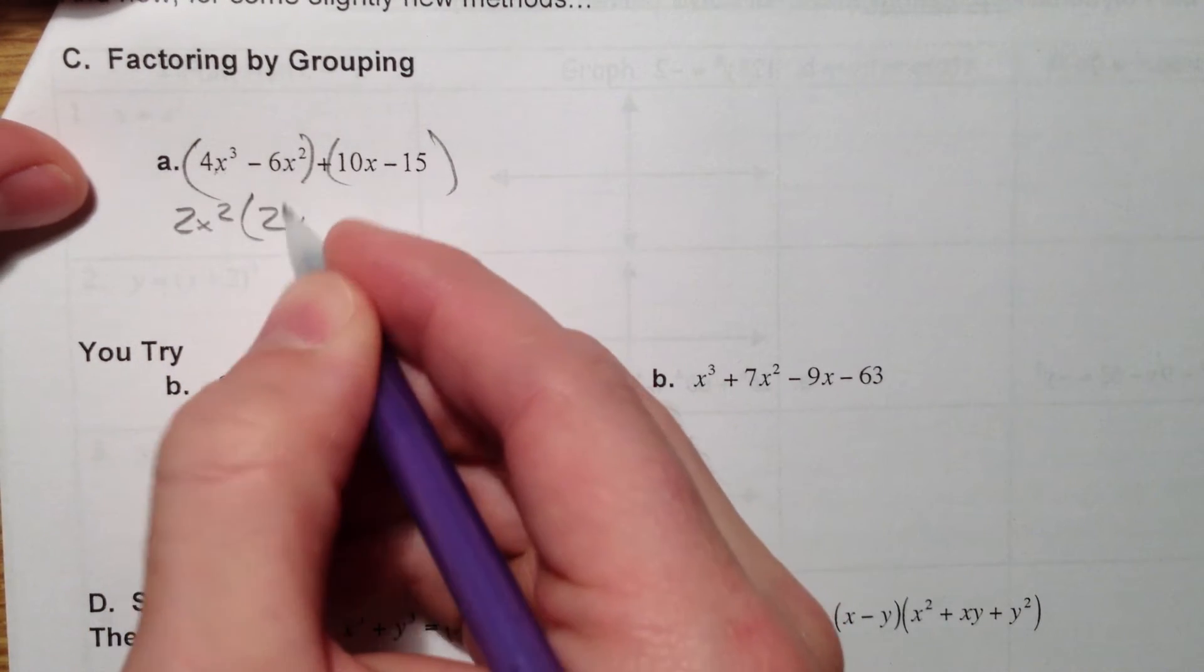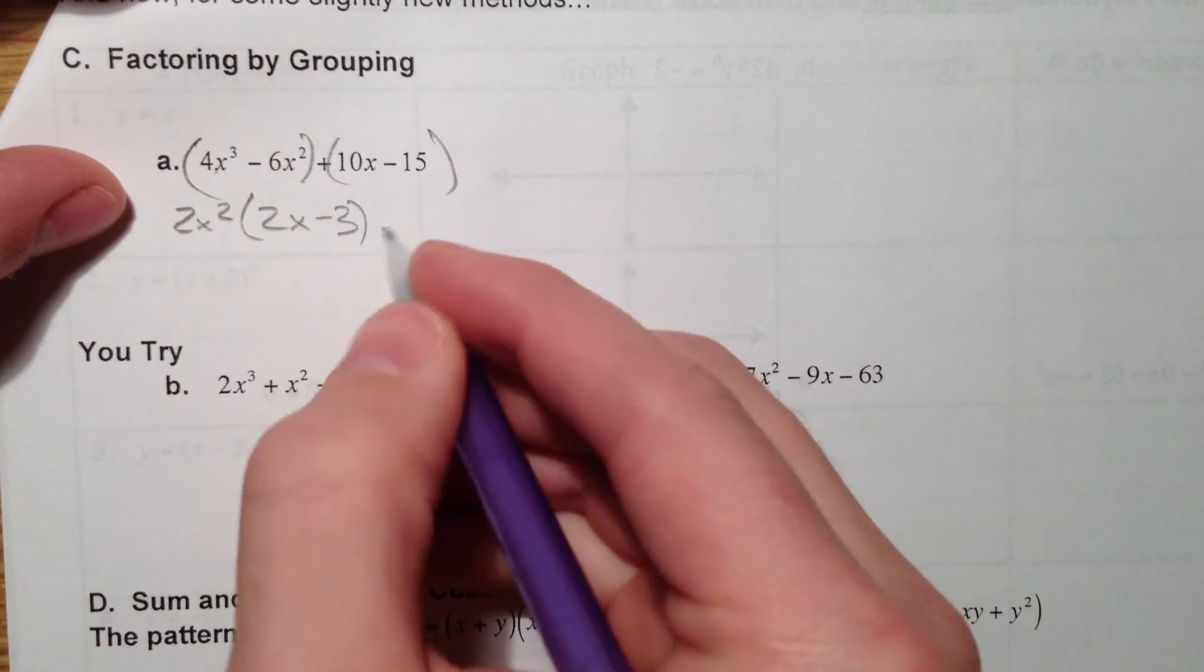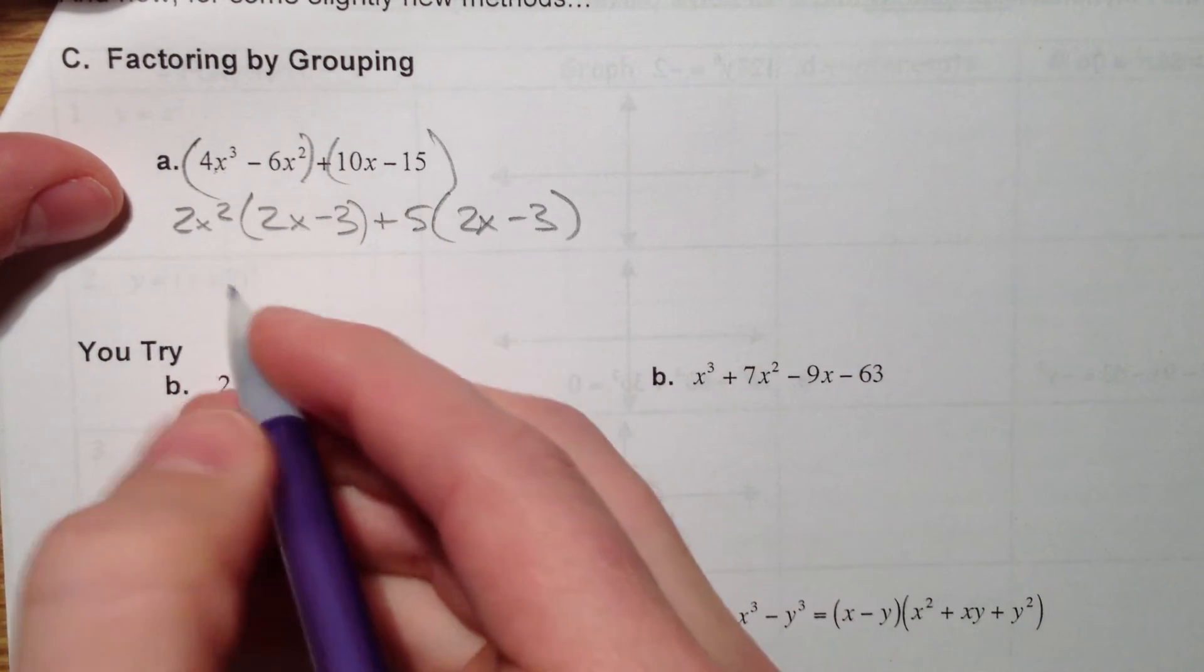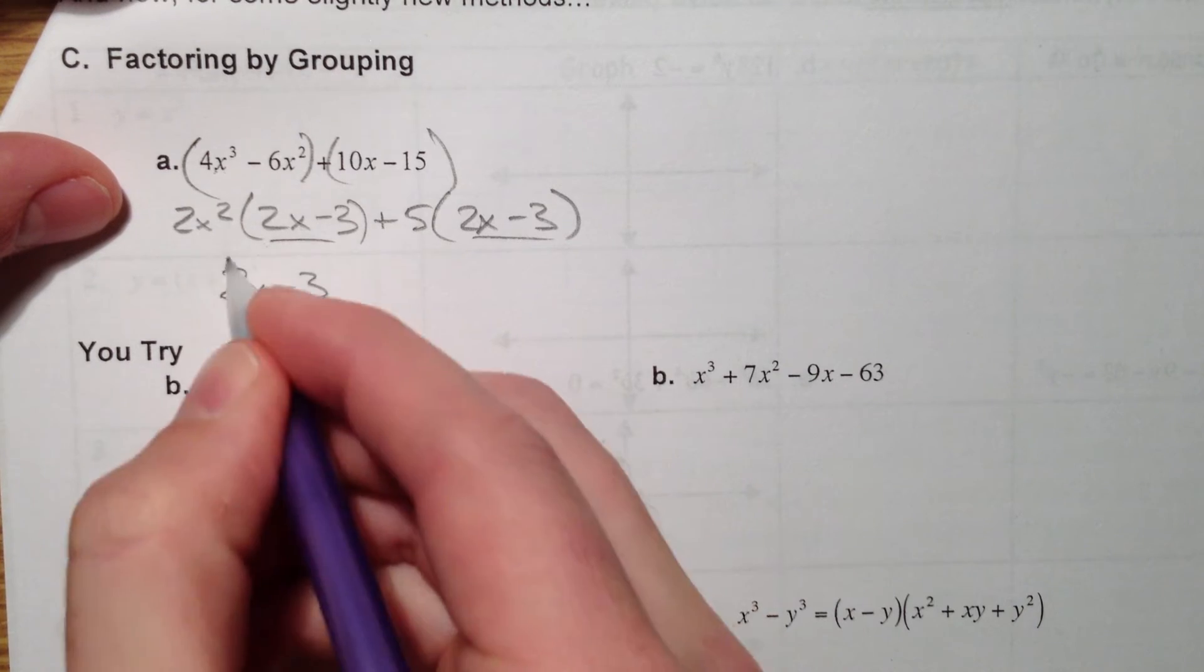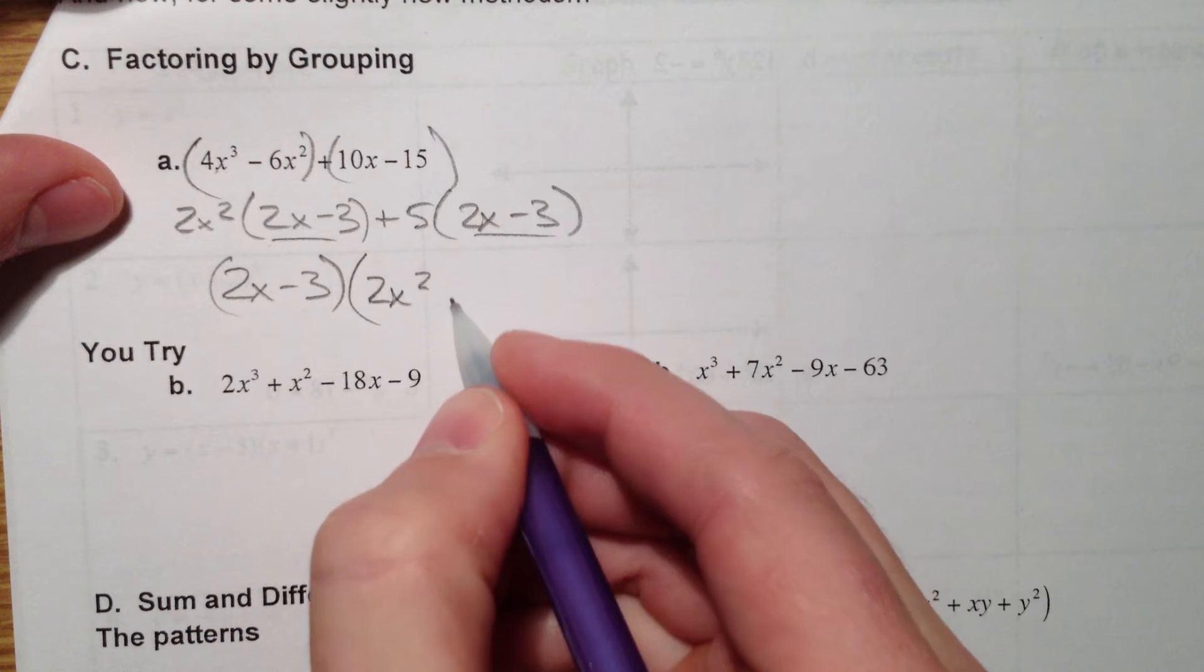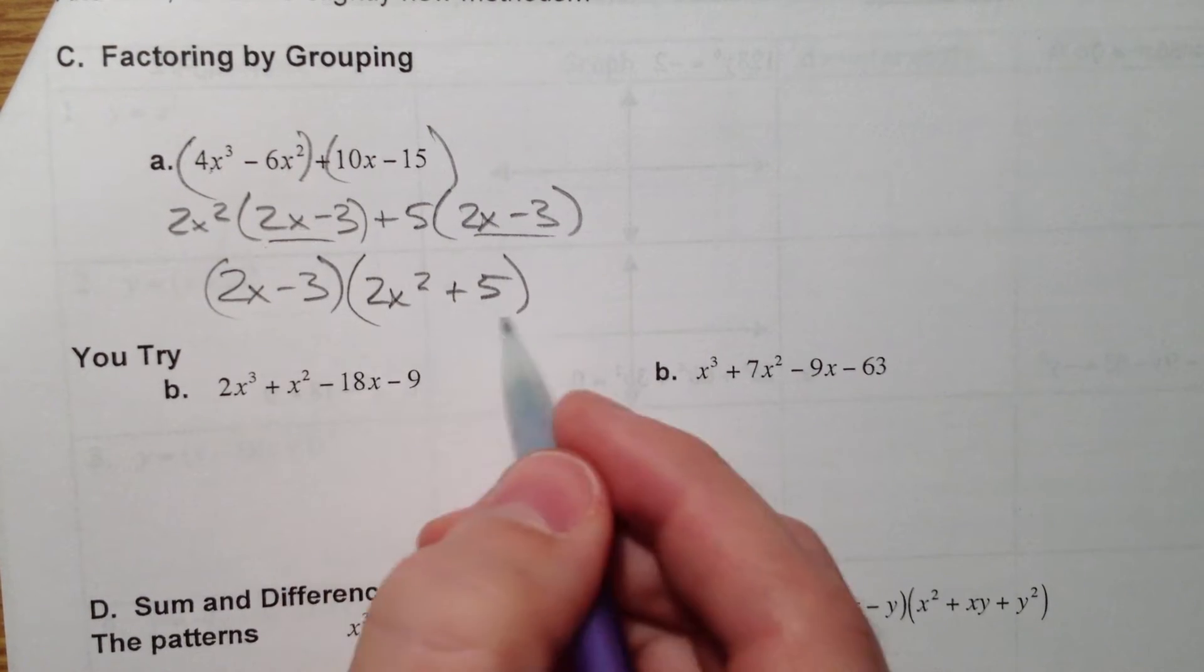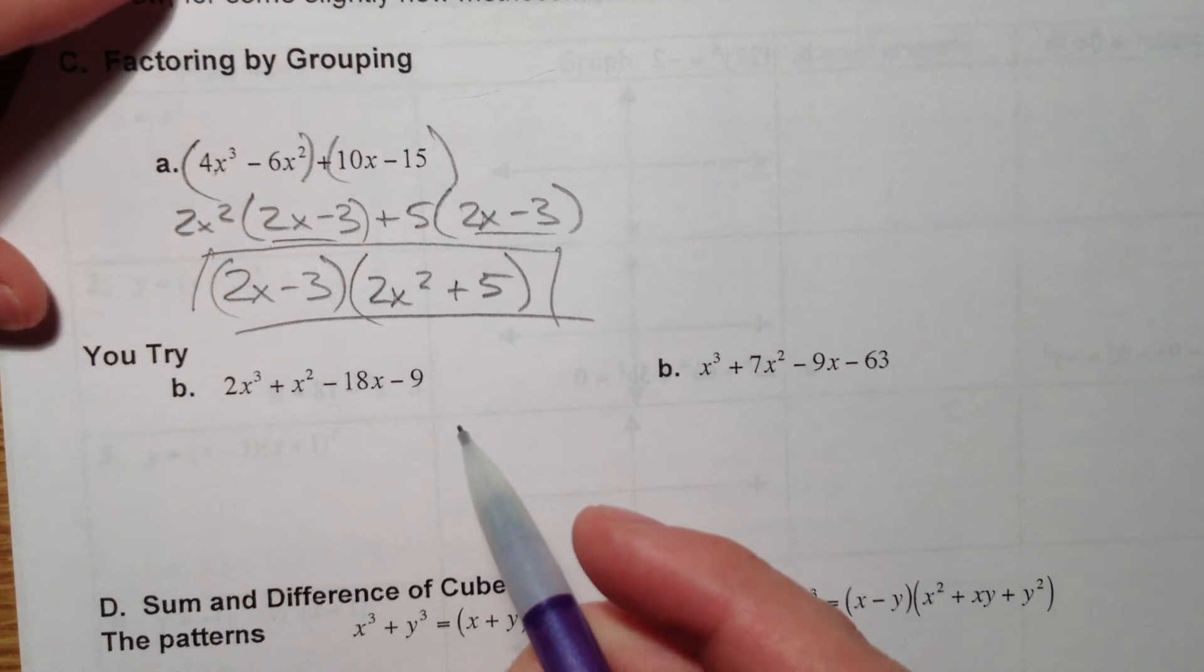We've done this before, so it's nothing new except that it's starting with x³. And so we can pull out a 2x². And that leaves 2x - 3. The second one here, we can pull out a 5. And that leaves 2x - 3. And 2x - 3 is what they have in common. So pull that out. And that leaves 2x² + 5. Anytime you have an x² in here, you want to see if you can take it any further. But this cannot be factored any further.